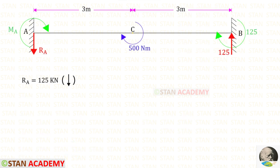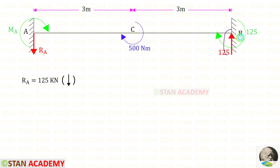Now let us find the vertical reaction RA. We know that in this beam there is no distributed load, so the values of RA and RB will be the same in magnitude but they will act in opposite directions. RB is acting in the upward direction, so RA should be acting in the downward direction.